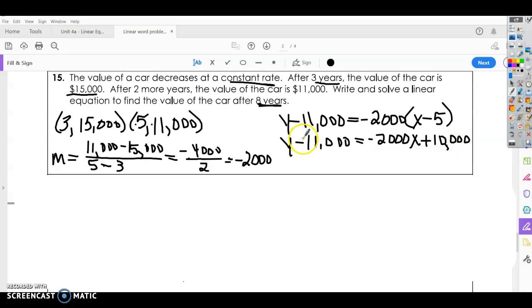Alright, if I add $11,000 to both sides, $10,000 plus $11,000 is $21,000.